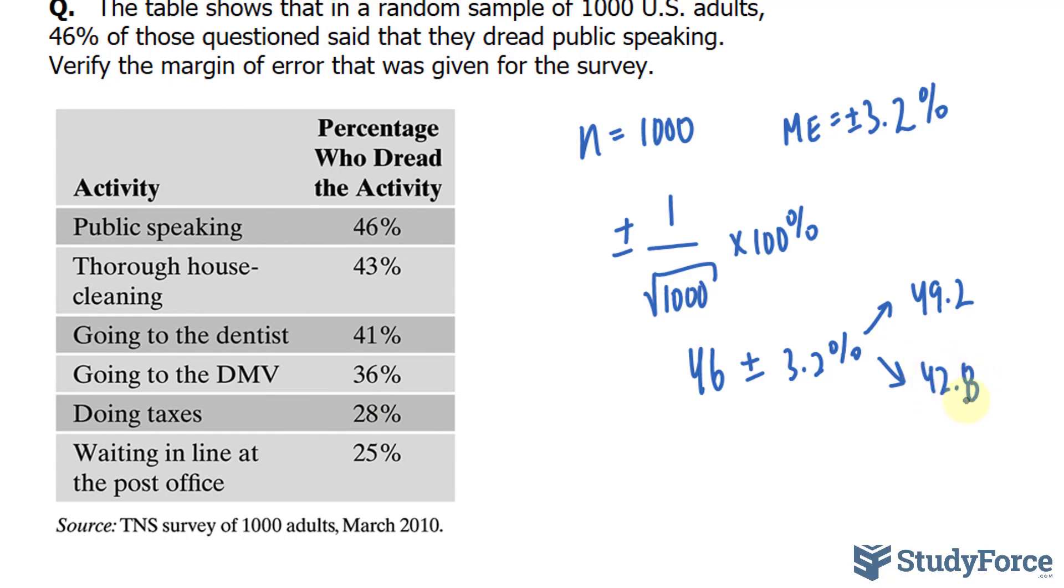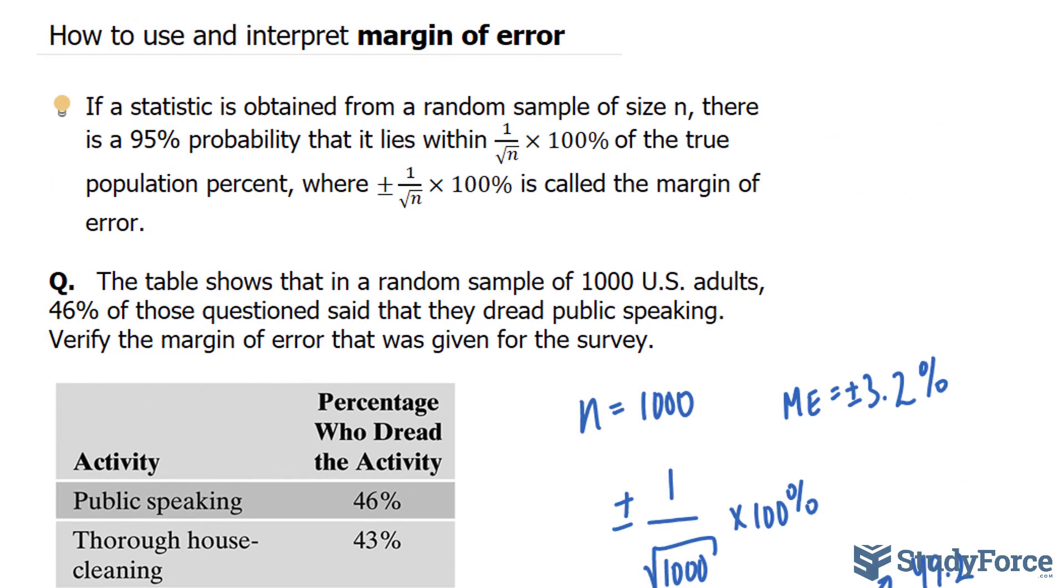So once again, there's a 95% probability that the true population lies between 42.8 and 49.2%. And there you have it. That is how to use and interpret margin of error.